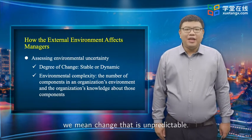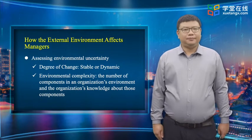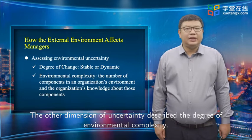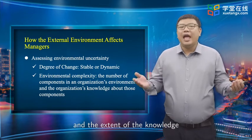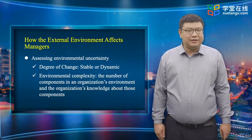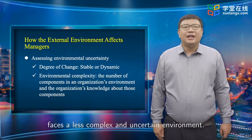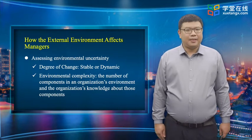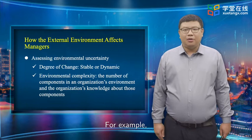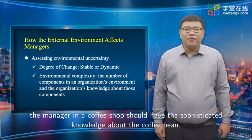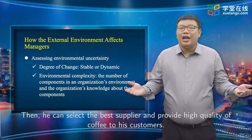When we talk about degree of change, we mean change that is unpredictable. If the change can be anticipated, it is not an uncertainty for managers. The other dimension of uncertainty describes the degree of environmental complexity — the number of components in an organization's environment and the extent of knowledge that the organization has about those components. An organization with fewer competitors, customers, suppliers, and government agencies faces a less complex and uncertain environment. For example, a coffee shop manager should have sophisticated knowledge about coffee beans to select the best supplier and provide high-quality coffee.